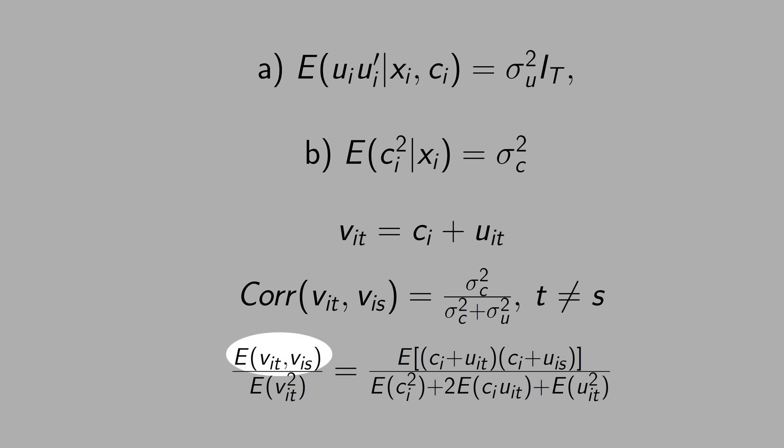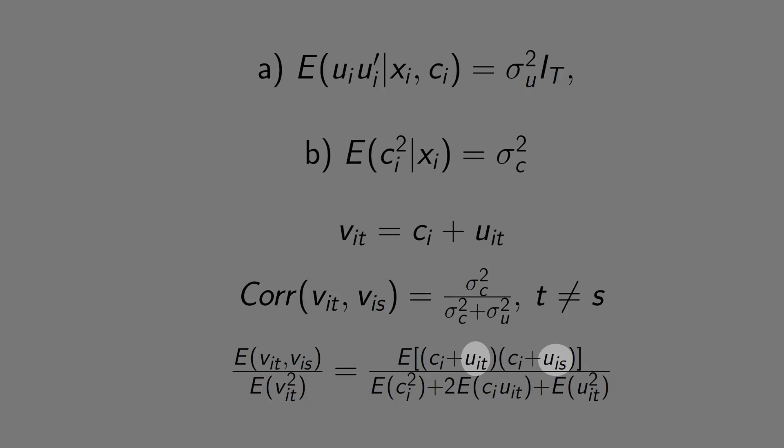Now, let's work with the covariance of ViT and ViS. This is the definition of ViT and this is the definition of ViS. Then, you have to distribute. Ci times Ci is the variance of C. You can note that the other distributions will be zero because C and U, they are independent. And note that UiT times UiS is zero as well. That means we are assuming that there is no autocorrelation between U.